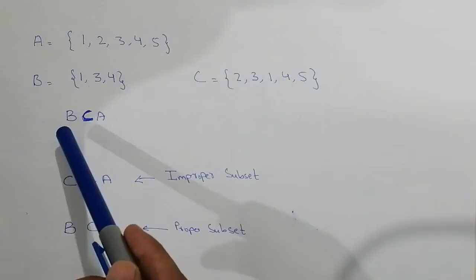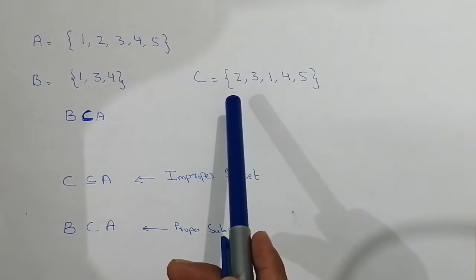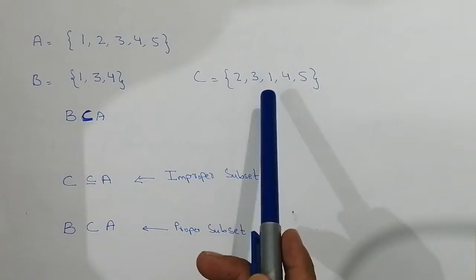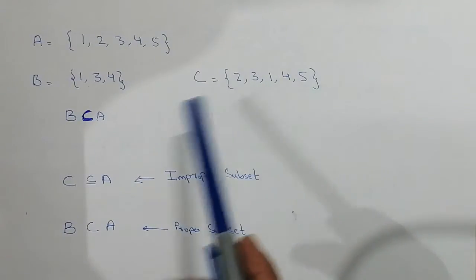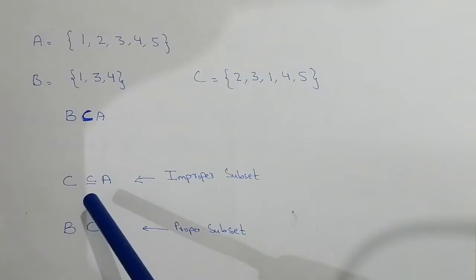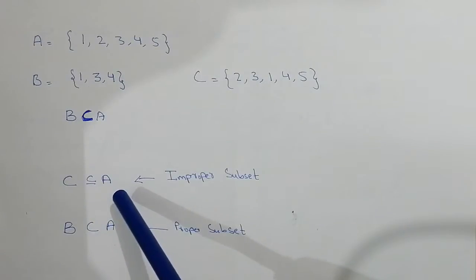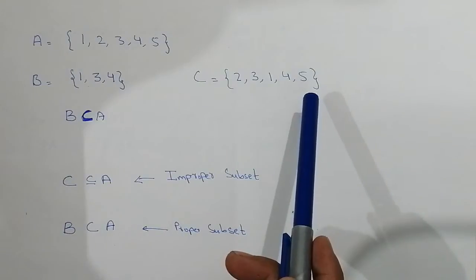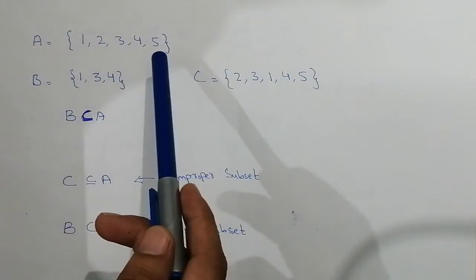And here you can see that set C has the elements 2, 3, 1, 4, and 5. So we can say that C is a subset of set A, because all the elements present in set C are present in set A.